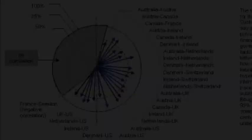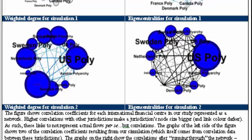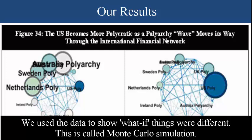Only in one case did we see a negative correlation. Illustrating the extent to which polyarchy seems to spread through the network, Figure 34 shows the extent to which polyarchy changes in one jurisdiction versus the next in repeats of our study. The problem with traditional econometrics is that the researcher might take some figures, run the analysis, and just show the results, not taking into account the natural variability in their data.